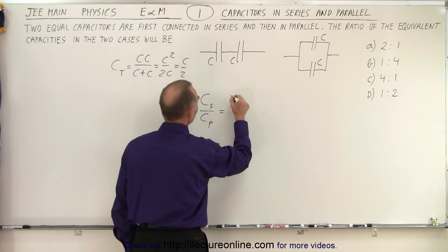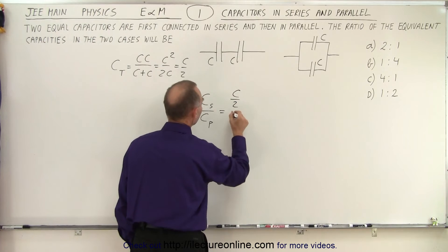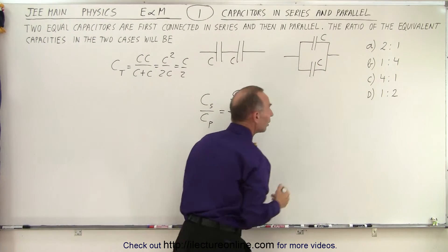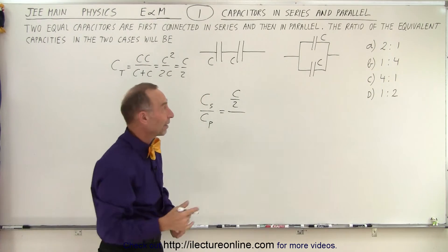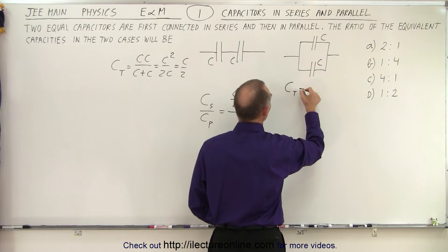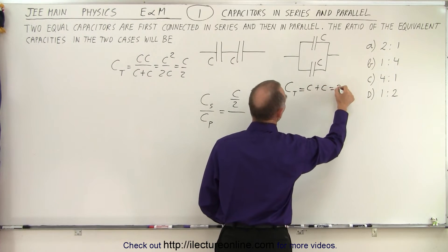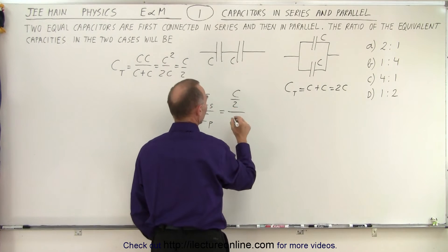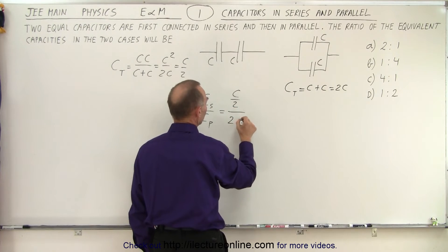And so you could say, well, this is equal to C over 2. And then when you connect the two capacitors in parallel, you end up with double the capacitance because then you have to add them. So you can see here that C total equals C plus C, which is 2C. So you double the capacitance. Here you have half the capacitance. So here we say that this is equal to 2C.